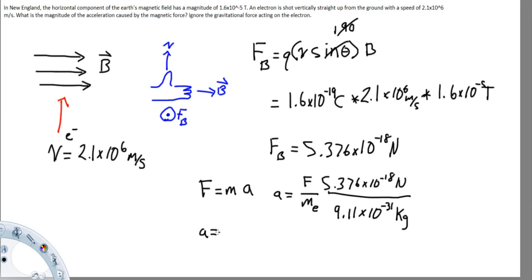And what we come out with is the acceleration due to the force of the magnetic field is 5.9 times 10 to the 12th meters per second squared.